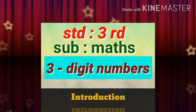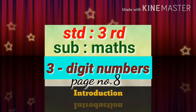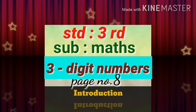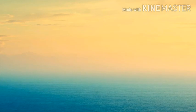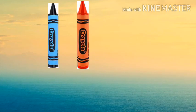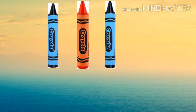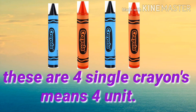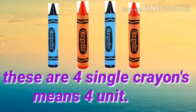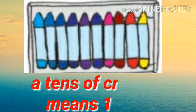Standard 3rd Subject Maths: 3-Digit Numbers Introduction. Dear Students, let's count the crayons — 1, 2, 3, 4. These are 4 single crayons, which means 4 units.